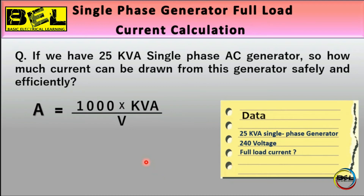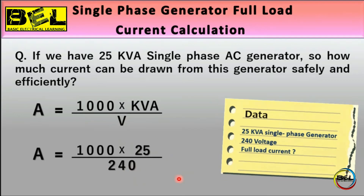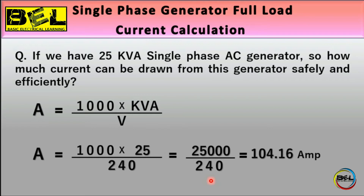Putting in the given data: A = (1000 × 25) / 240, since the generator is 25 kVA and the voltage is 240 V. So that becomes 25,000 divided by 240. Using a calculator, we find the current is 104.16 amperes.